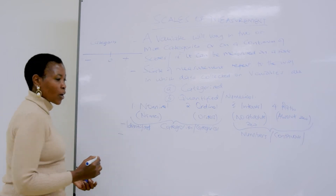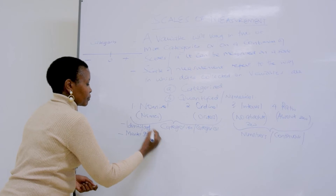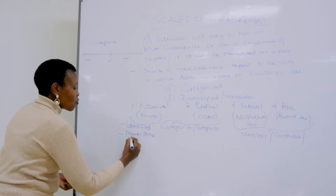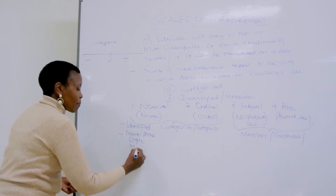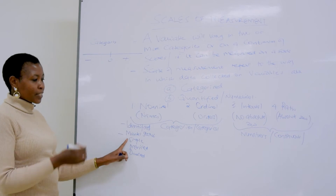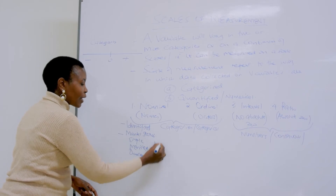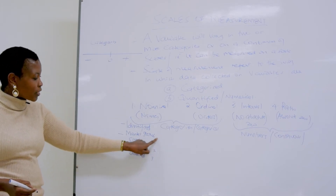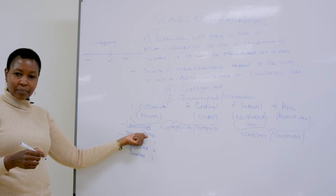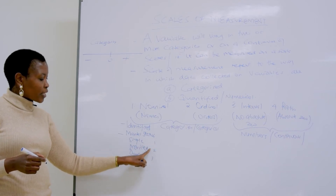For instance, if we talk about marital status, and we have collected data — we have people who are single, people who are married, people who are divorced — when we get to analysis, we attach a label to these responses. Maybe we give single one, married two, divorced three. You can also interchange, because these numbers carry no quantitative value. We have only identified the variable marital status and collected data as a category.